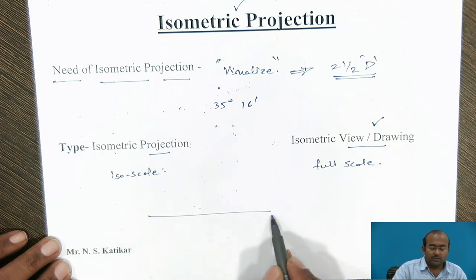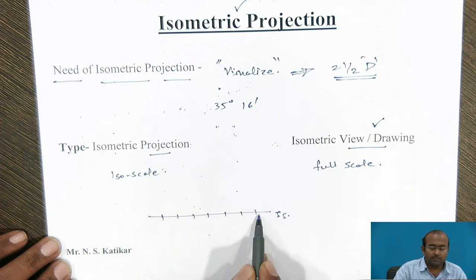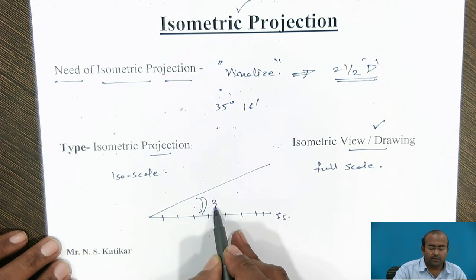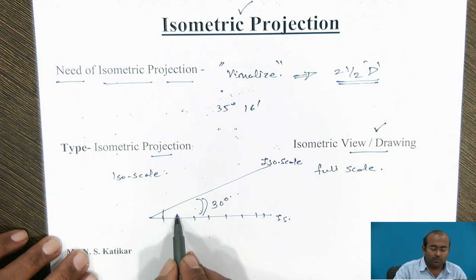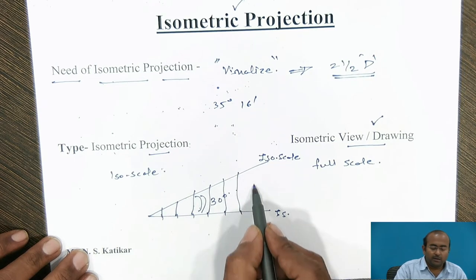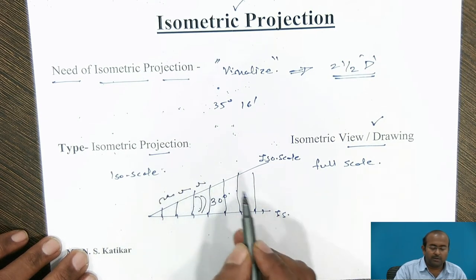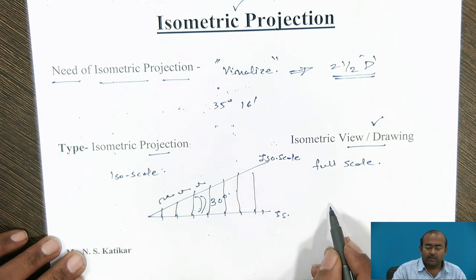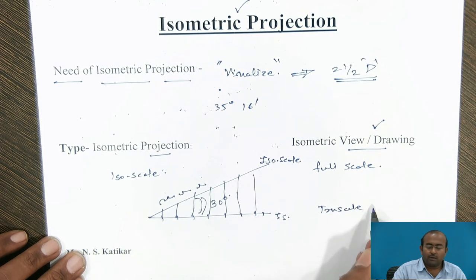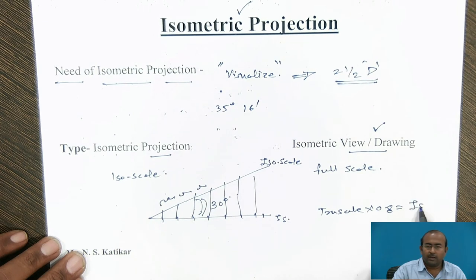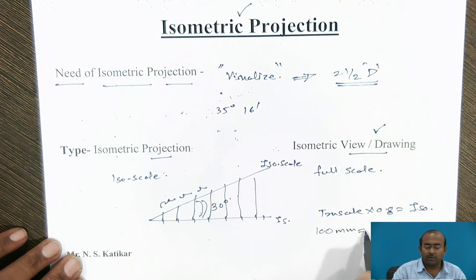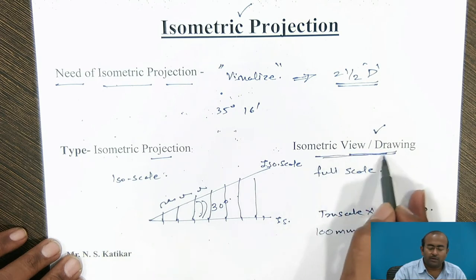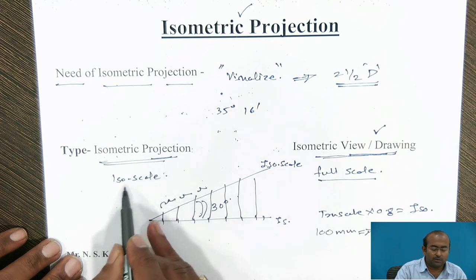What exactly is the isometric scale? Suppose this is the true scale. At 30 degrees, the scale is called the iso scale. To obtain it, we project the true scale onto the 30-degree line — those measurements are the iso scale. Theoretically, iso scale equals true scale multiplied by 0.8. So if a side length is 100 mm, it has to be drawn as 80 mm in the isometric view, while isometric projection uses iso scale.